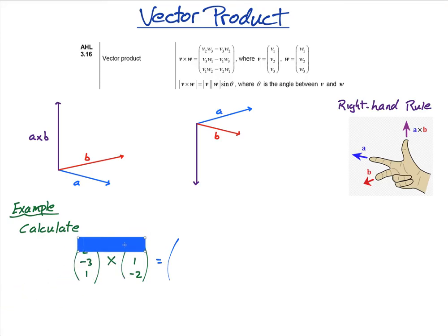So the first, the x component, what we do is we cover up this, we cover up the first two, and it is v2 times w3, so this times this, minus this times this. So, let's write that, negative 3 times negative 2, minus, so this times this, minus this times this, which is just 1 times 1, 1 times 1.